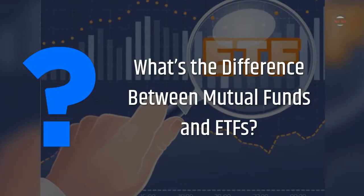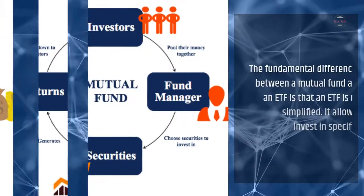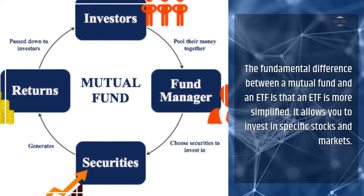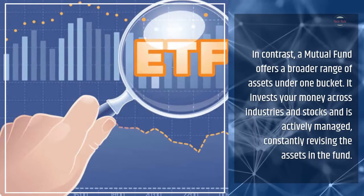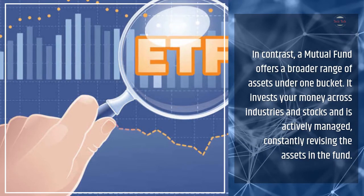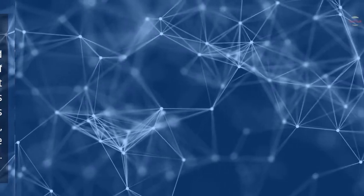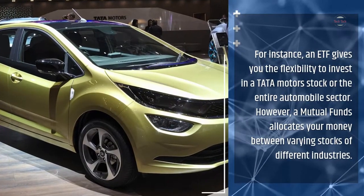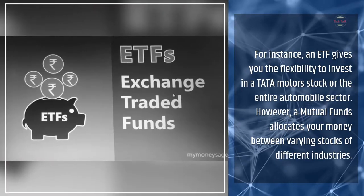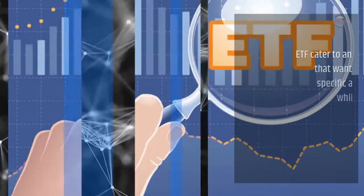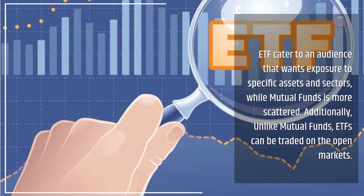What's the difference between mutual funds and ETFs? The fundamental difference is that an ETF is more simplified — it allows you to invest in specific stocks and markets. In contrast, a mutual fund offers a broader range of assets under one bucket, investing your money across industries and stocks, and is actively managed, constantly revising the assets in the fund. For instance, an ETF gives you the flexibility to invest in a Tata Motors stock or the entire automobile sector. However, a mutual fund allocates your money between varying stocks of different industries. ETFs cater to an audience that wants exposure to specific assets and sectors, while mutual funds are more scattered. Additionally, unlike mutual funds, ETFs can be traded on the open markets.